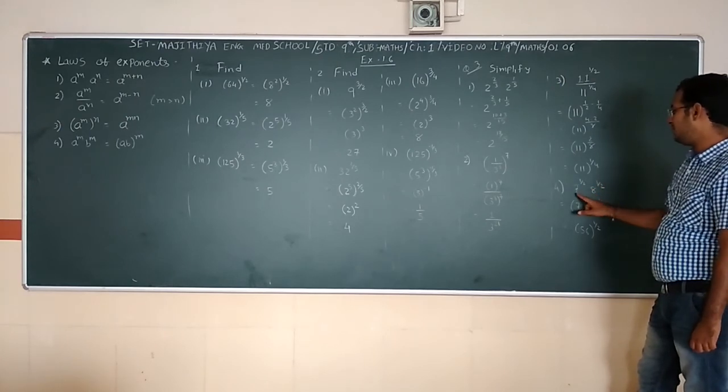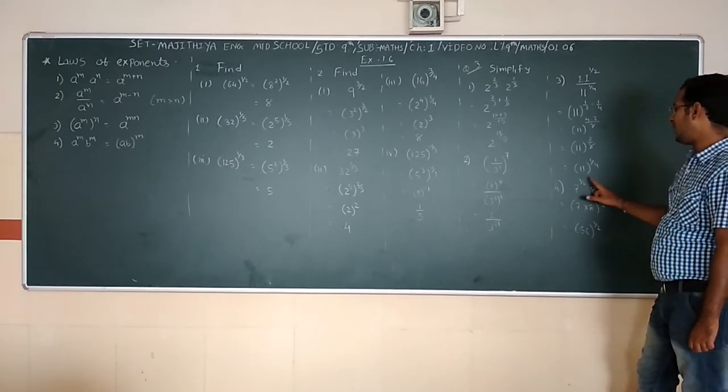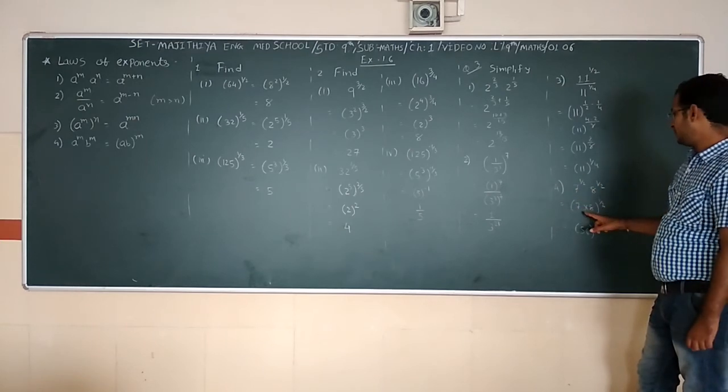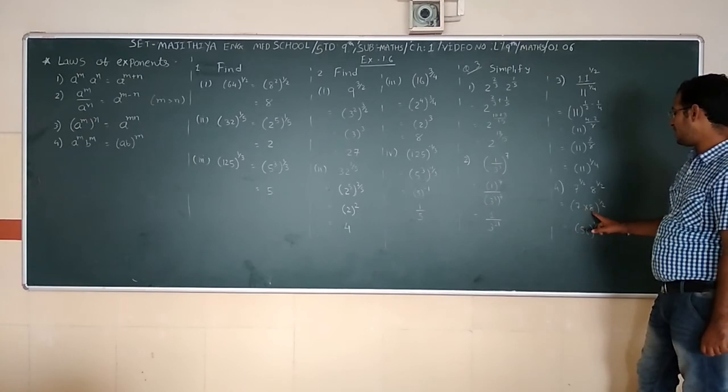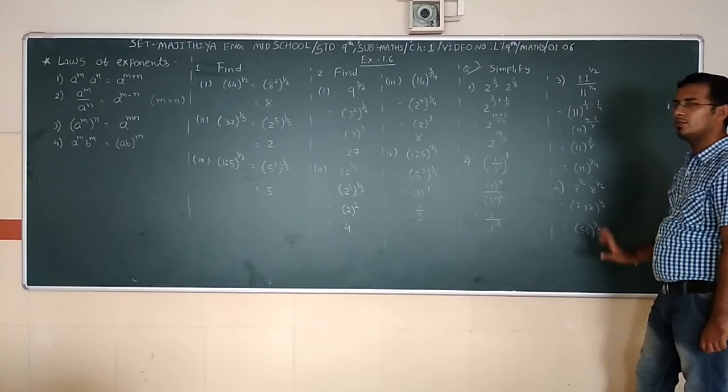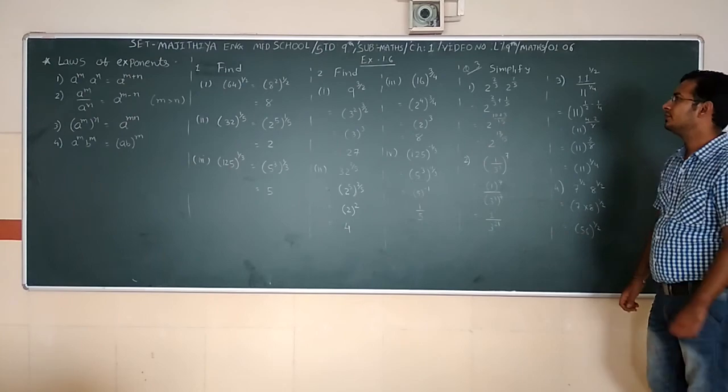Part (iv): 7^(1/2) × 8^(1/2). Here base is different but power is same, so we combine bases: (7×8)^(1/2) = 56^(1/2).